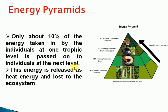When moving from green plants to the next trophic level, 10% of energy is transferred. For example, in a food chain, a rabbit receives 10% of the plant's energy. The remaining energy is released as heat energy or lost to the ecosystem.